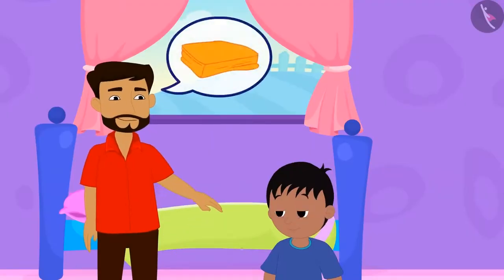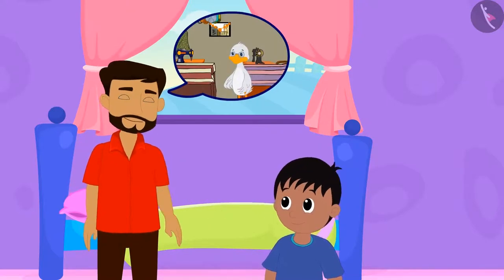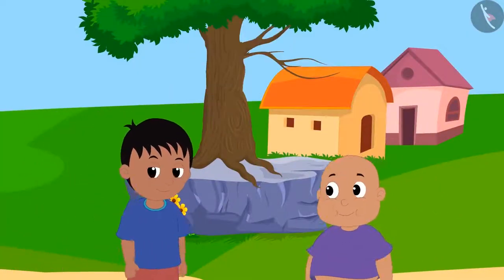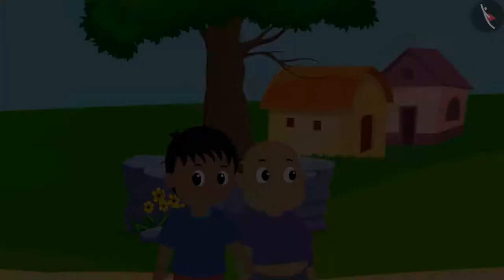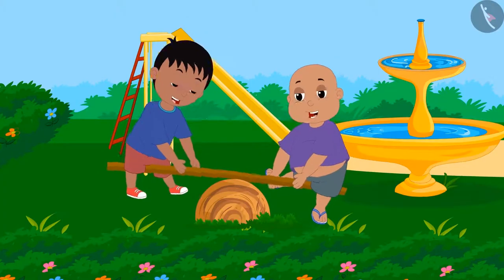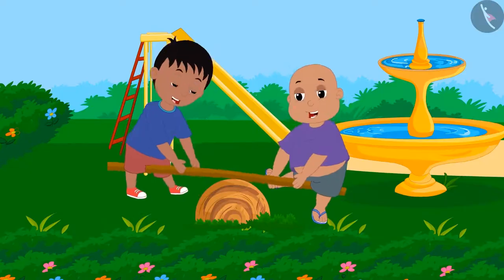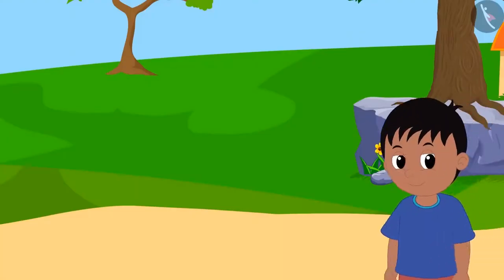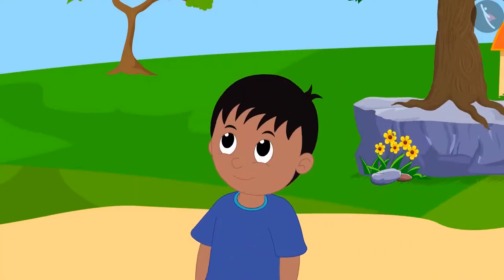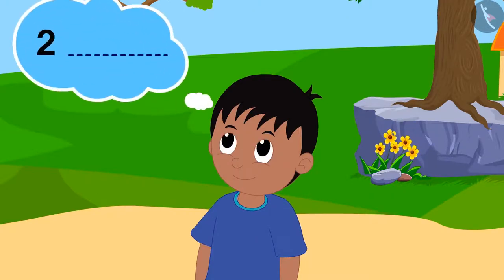Raju's father asks him to bring a piece of cloth for his shirt from the duck uncle's shop. On the way, Raju met Bablu and they went to the park to play. Raju totally forgot about bringing the cloth for his father's shirt. When he was returning home, he remembered that he had to go to the uncle's shop. But he only remembered the number 2 from the measurements his father had given him.